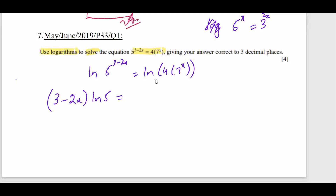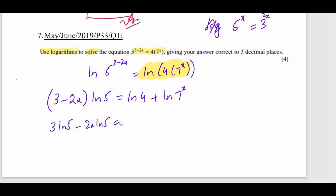On the right side we apply the product rule of logarithms: ln 4 + ln(7^x). Applying the power rule again gives ln 4 + x·ln 7. Expanding the left side: 3·ln 5 − 2x·ln 5 = ln 4 + x·ln 7.